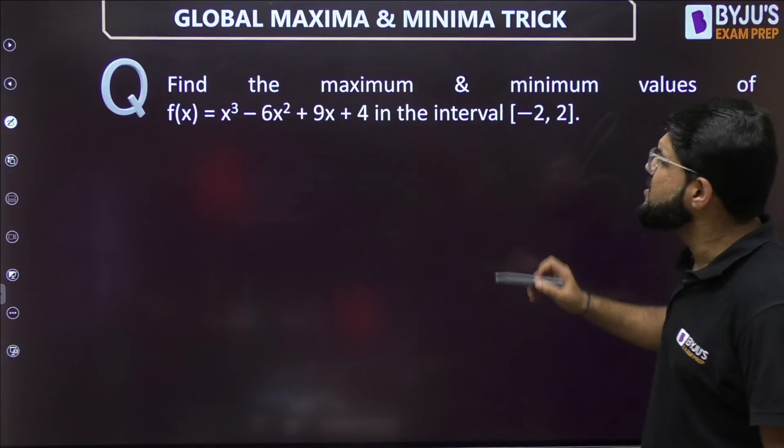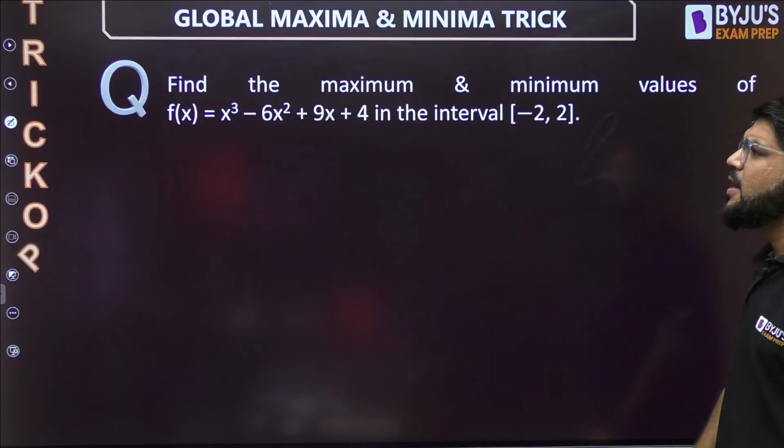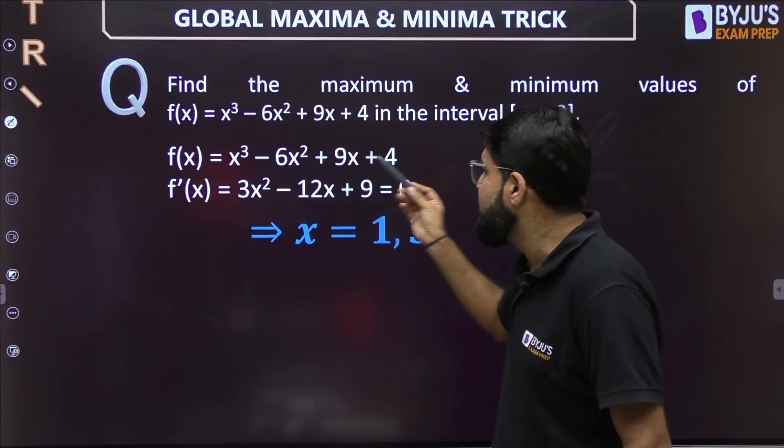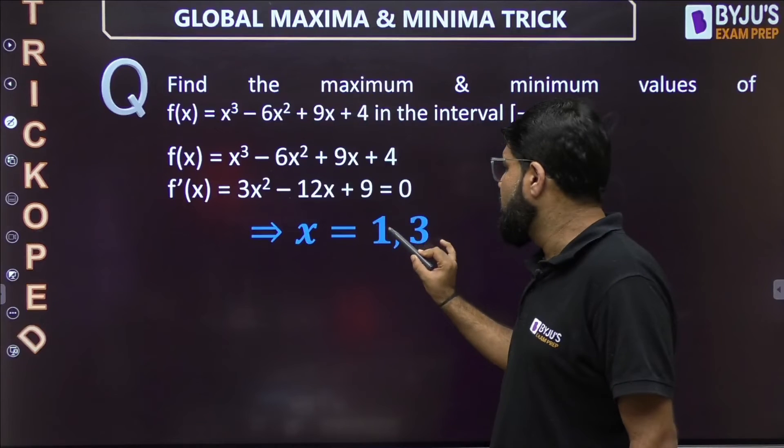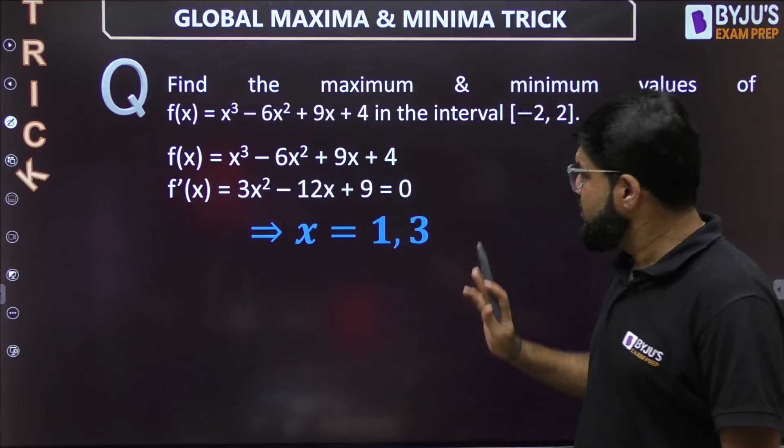Next, one more quick question guys. Find the maximum and minimum values of a function x³ - 6x² + 9x + 4 in the interval [-2, 4]. Have a look into this. Again, I will take the first derivative and put it equal to 0, and I get the stationary points 1, 3. I get the stationary points, that is x = 1, 3.